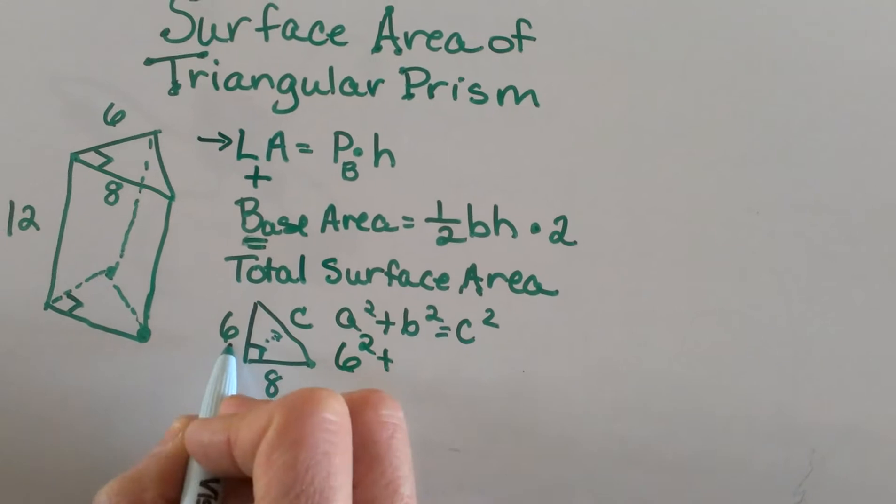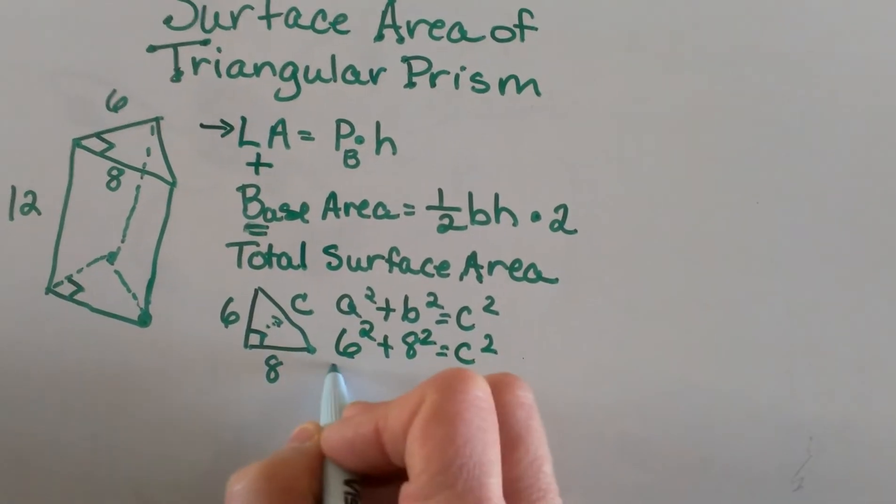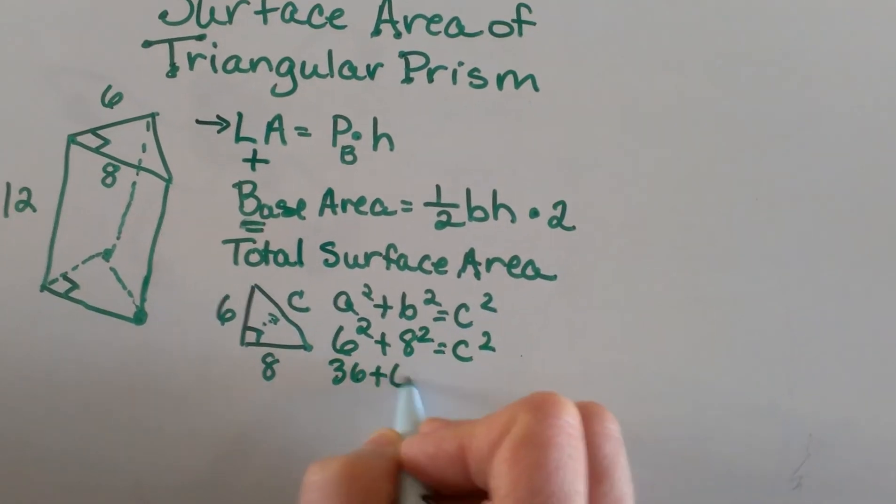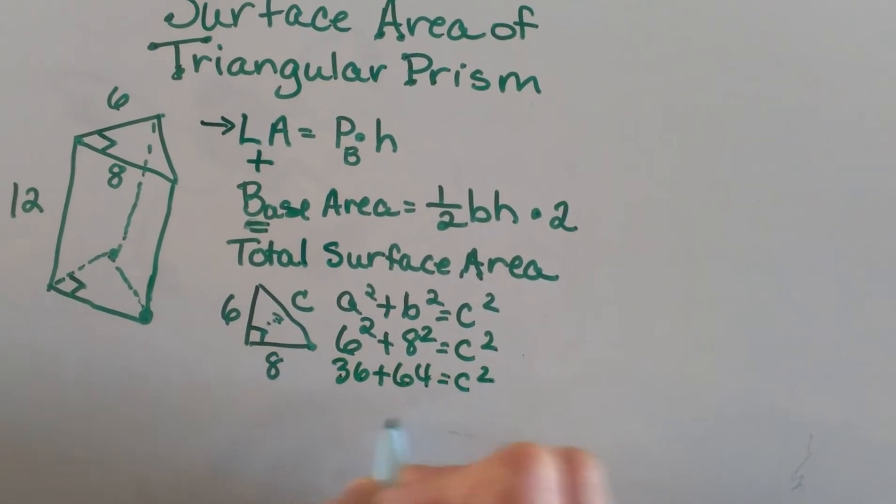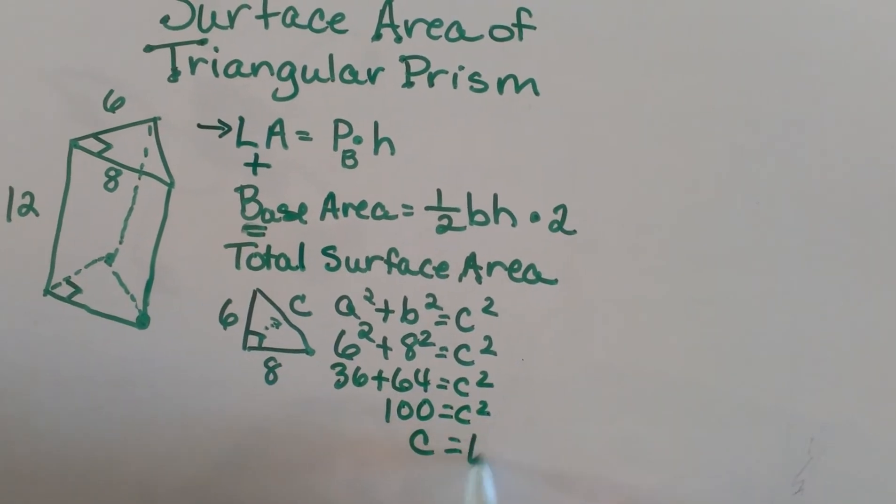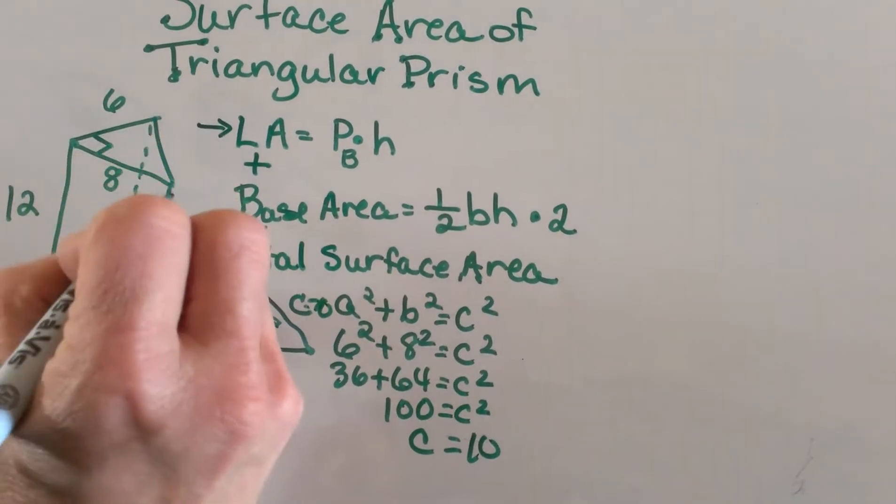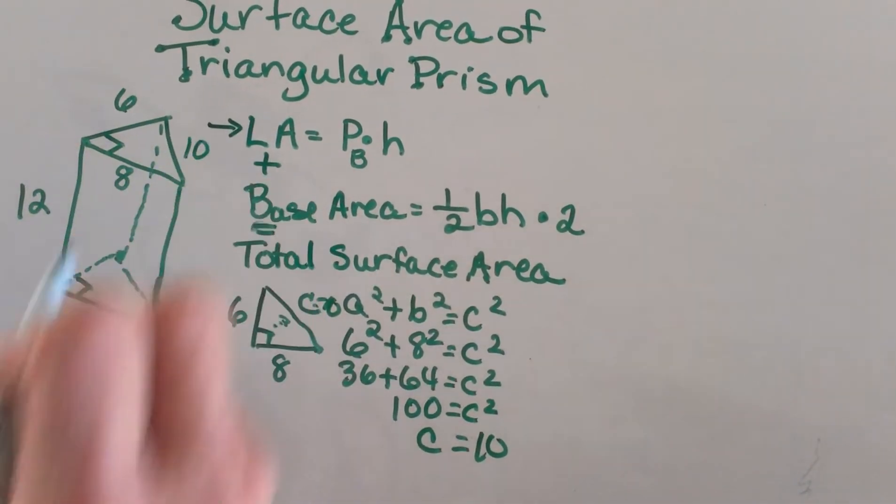That's 36 + 64 = c², which adds to 100, so c must equal 10. That makes this side 10, which I can go back up to my triangle now and label this side 10.